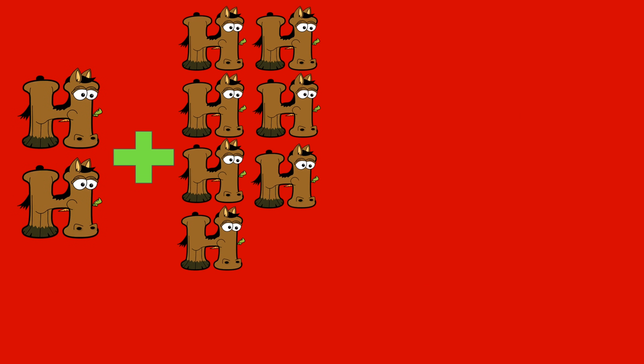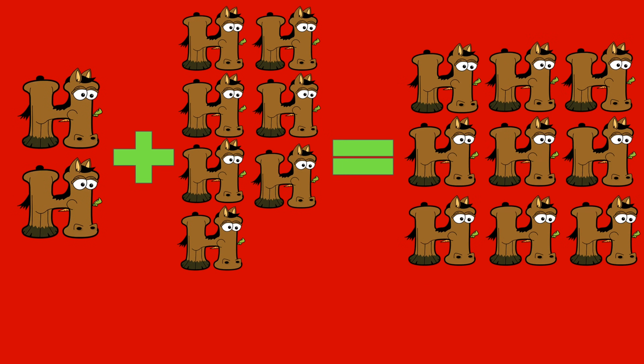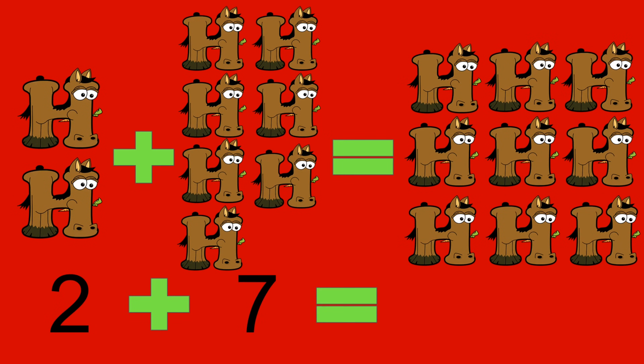Bear. 2 horses plus 7 horses equals 9 horses. 2 plus 7 equals 9.